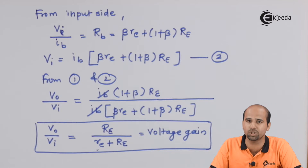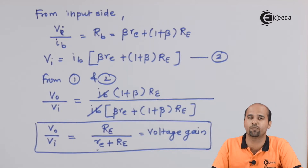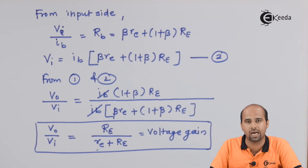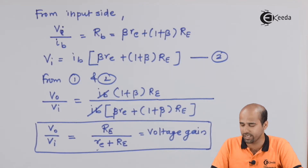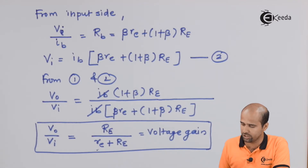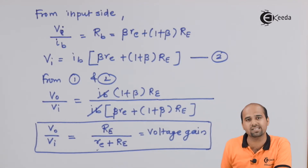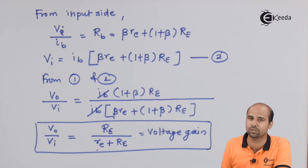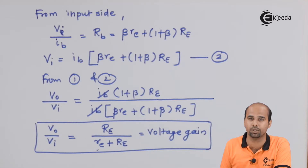The output is obtained at the emitter side and it follows the input. Whatever input is applied, ideally the same voltage appears at the output. That is why this circuit is called the emitter follower — the emitter terminal follows the input voltage. This is the answer you should give in your viva.